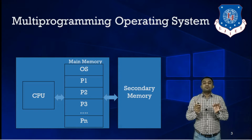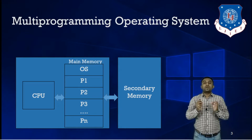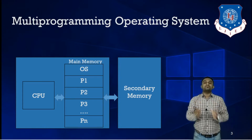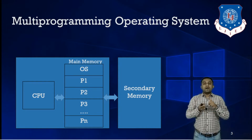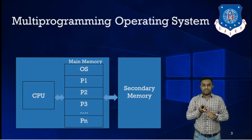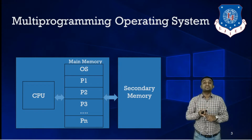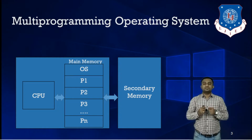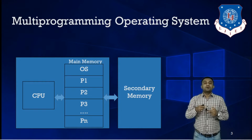If we have one processor in the machine, you can execute only one task at a time — no more than that. By having a uniprocessor machine, you cannot execute multiple processes simultaneously. It is not possible. The actual parallel mechanism cannot be achieved with the help of a uniprocessor machine.